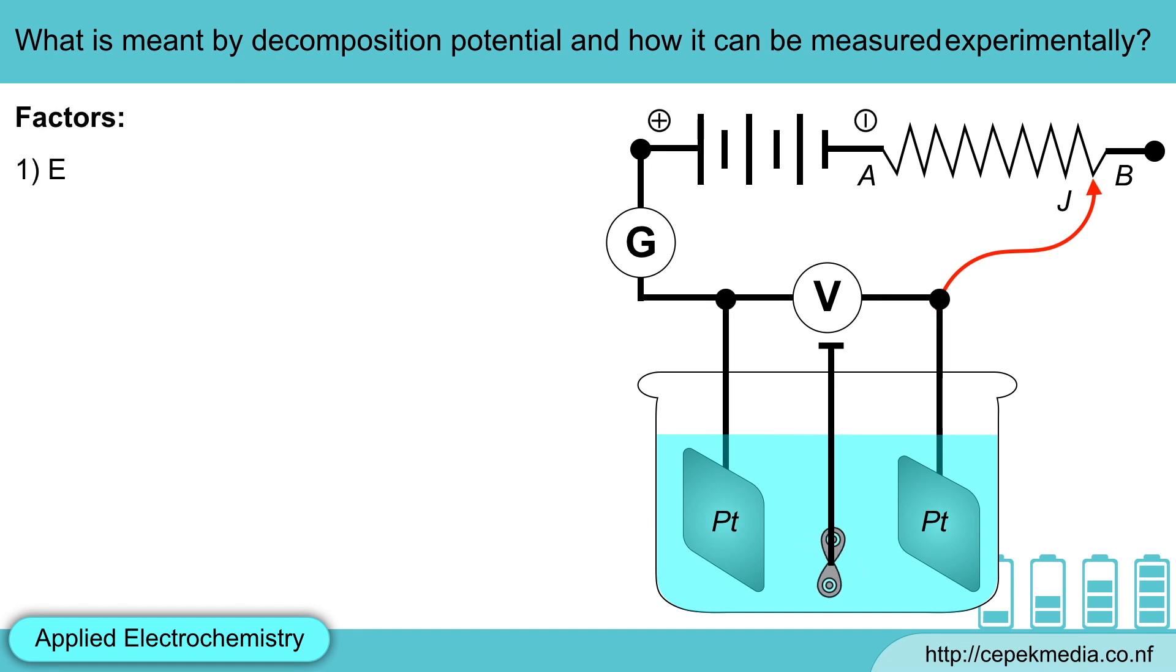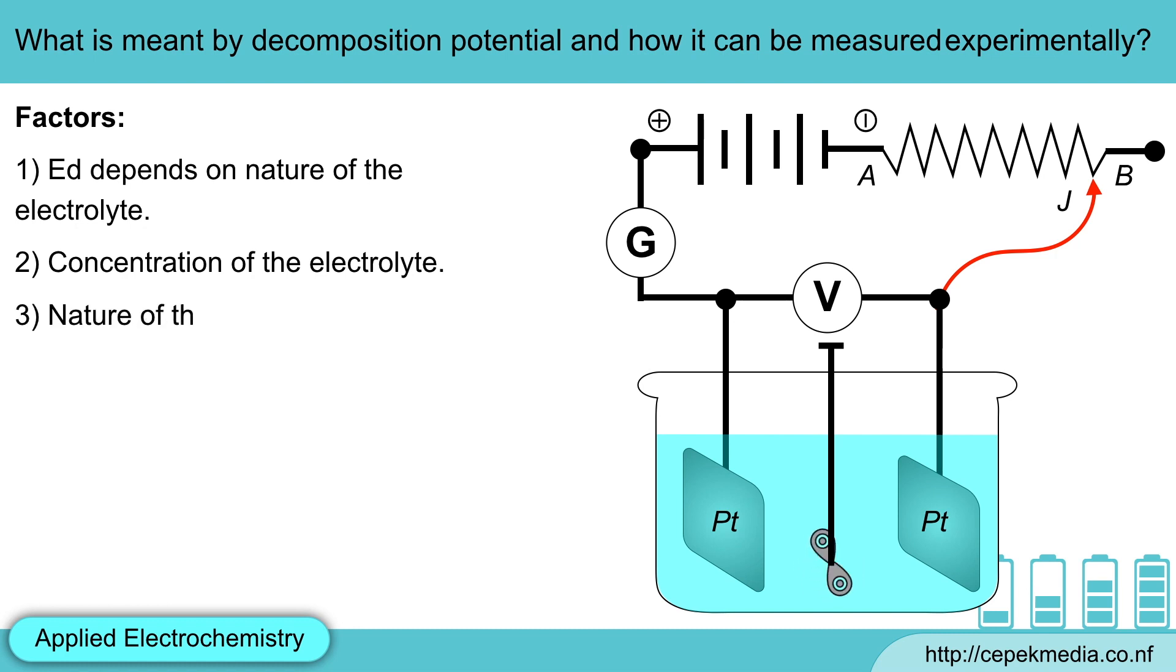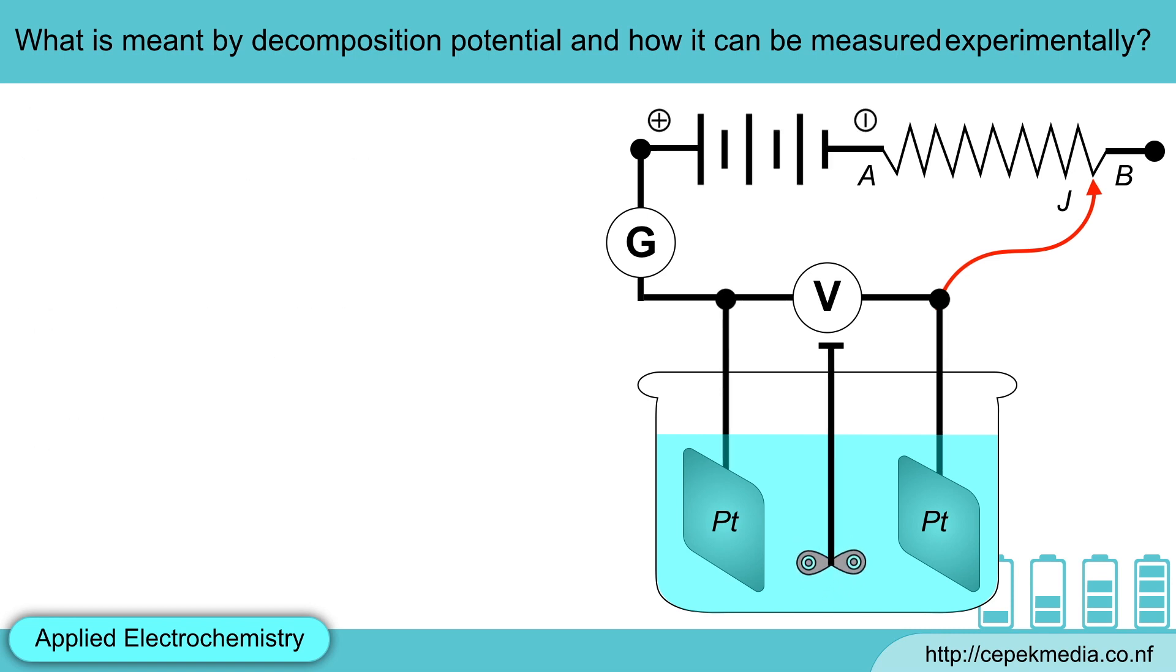Decomposition potential depends on nature of the electrolyte, second, concentration of the electrolyte, third, nature of the electrodes, fourth, nature of the product of the electrolysis and temperature.